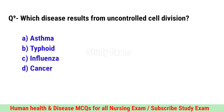Question No. 9. Which disease results from uncontrolled cell division? Correct option is D. Cancer.